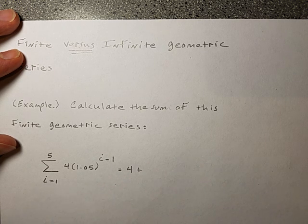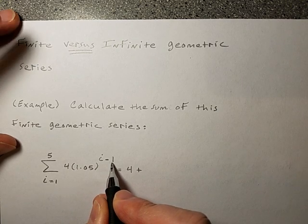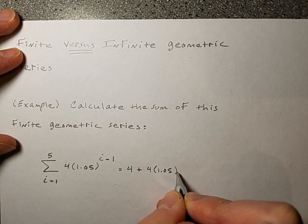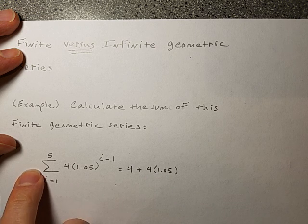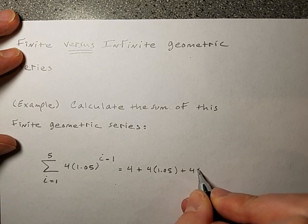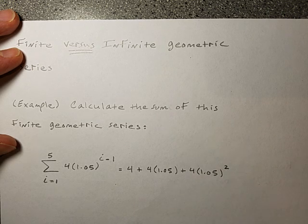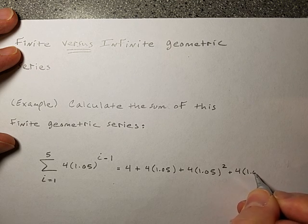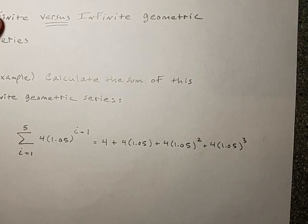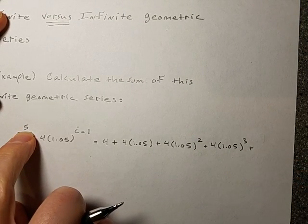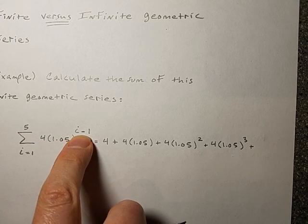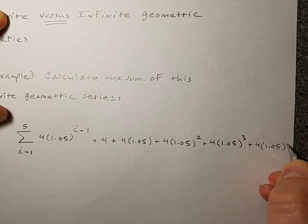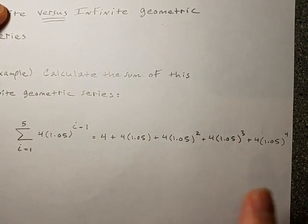That's what a series is. So then we go to two — two minus one is one, so I get 1.05 to the first power. So I'm going to write four times 1.05 to the first power. Then we go to three and we get four times 1.05 squared. And we go to four, and we get four times 1.05 to the third power. By now you can see the pattern. And if you go to the stopping point, which is five, you get five minus one — the power is going to be four. So we get four times 1.05 to the fourth power. There's our finite series.